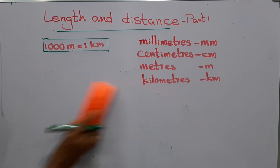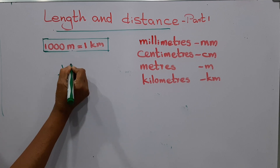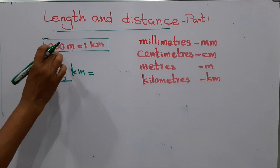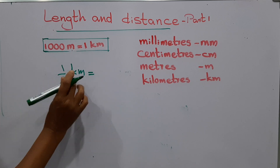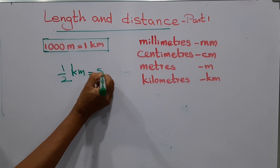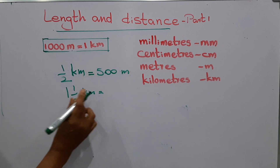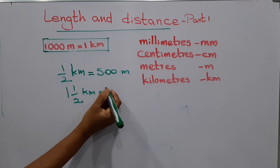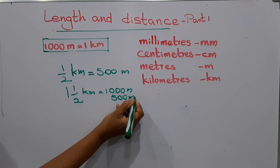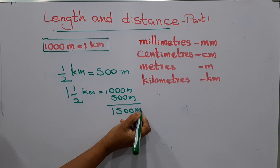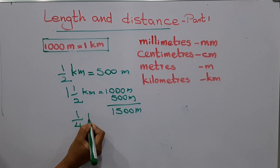I'm asking: half of a kilometer in meters. One kilometer equals one thousand meters, so half of a kilometer means half of one thousand — that is five hundred meters. For one point five kilometers: one thousand meters plus five hundred meters equals one thousand five hundred meters.